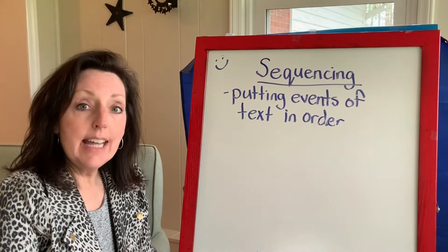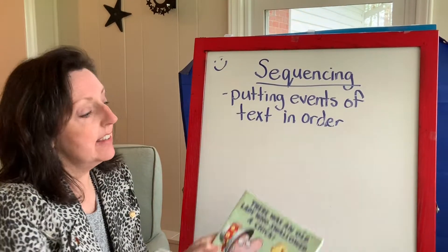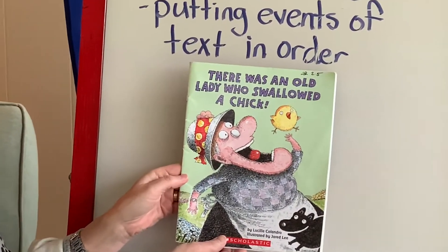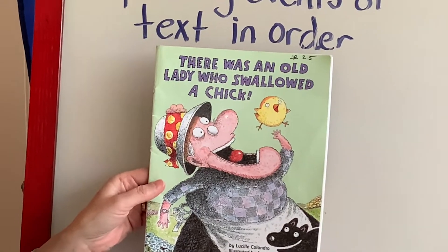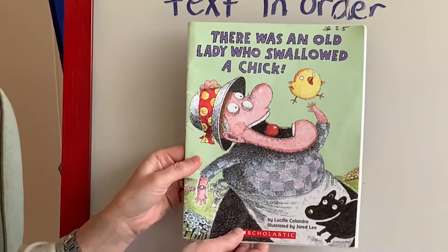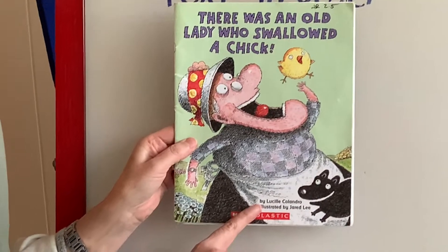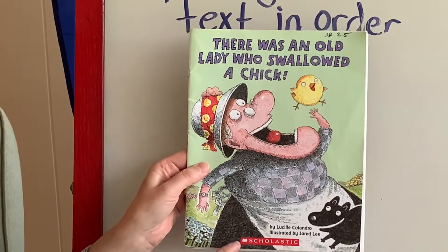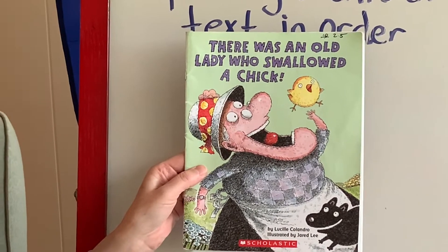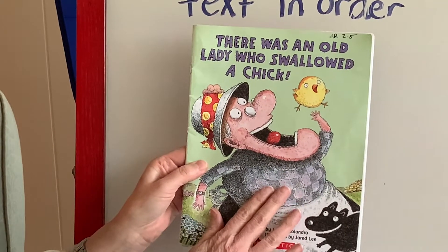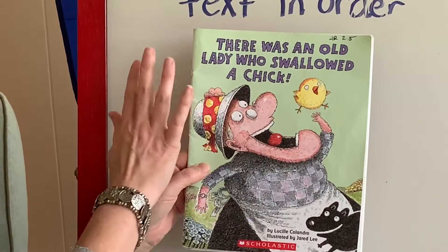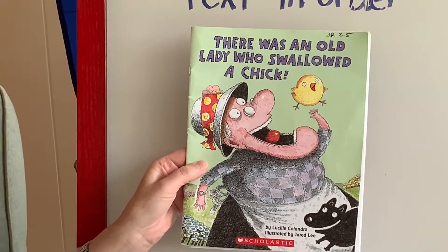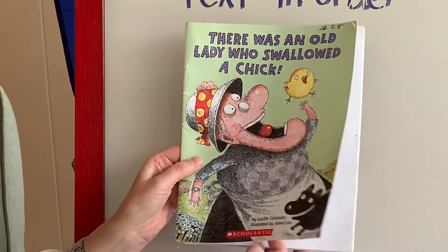So as I read today's text — and it's a great one — it's called 'There Was an Old Lady Who Swallowed a Chick.' We love our old lady books; we've read lots of those this year. It's by Lucille Calandro, illustrated by Jared Lee, and published by Scholastic. As we read this together today, think about the events of the story because we're going to be putting them in order in a little bit. Are you ready? Here we go.